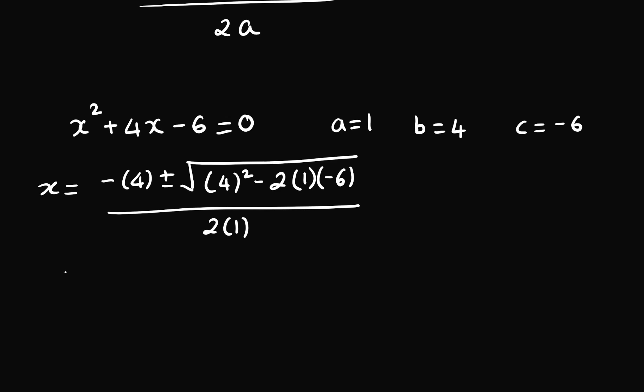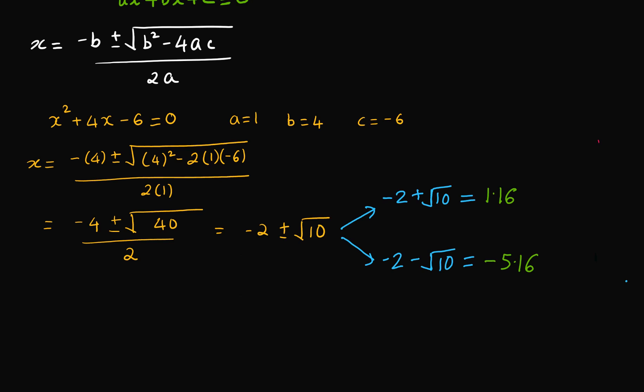Now, let's solve it further. So, ideally when you plug it into your calculator, you can get an even simplified value as minus 4 plus or minus square root of 40 divided by 2, which is nothing but minus 2 plus or minus square root of 10. Therefore, solving it further, you get 1.16 and minus 5.16. So, what are the roots of the quadratic equation? They are 1.16 and minus 5.16.